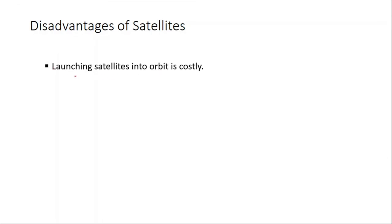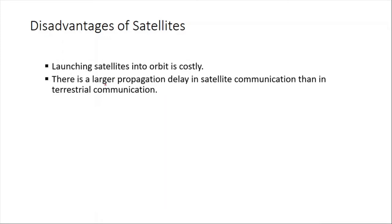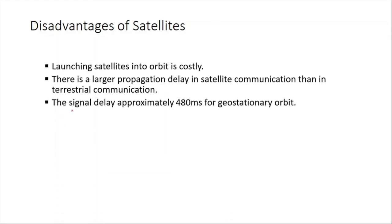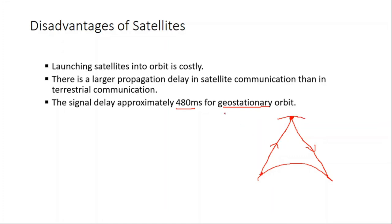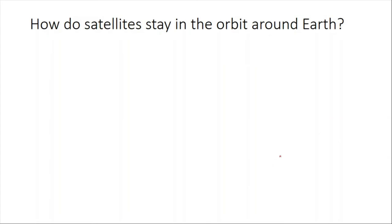The disadvantages are that launching satellites into orbit is costly, and there is a large propagation delay compared to terrestrial communication. For geostationary orbit the signal delay is approximately 480 milliseconds. This is because the signal travels up to the satellite and then back down to earth, which takes a noticeable amount of time.